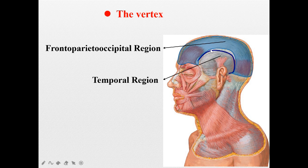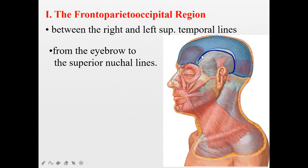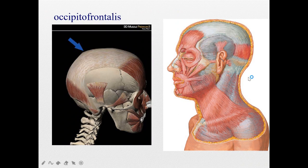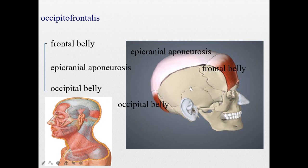The boundary between these regions is the superior temporal line. The frontal-parietal-occipital region extends from the eyebrow to the superior nuchal lines and the external occipital protuberance. Notice this muscle — its name is occipitofrontalis. It has two bellies: a frontal belly and an occipital belly, connected by one tendon. This tendon is named the epicranial aponeurosis.